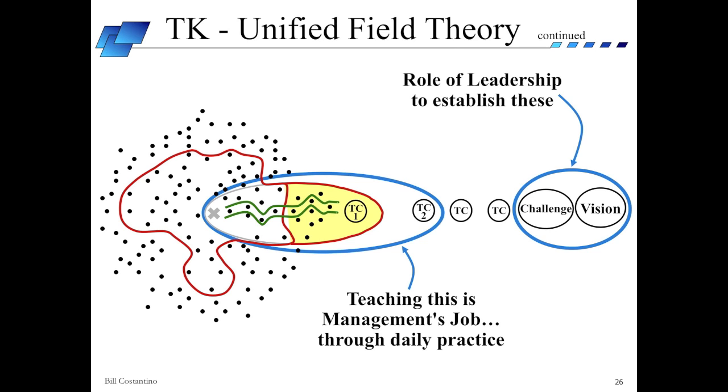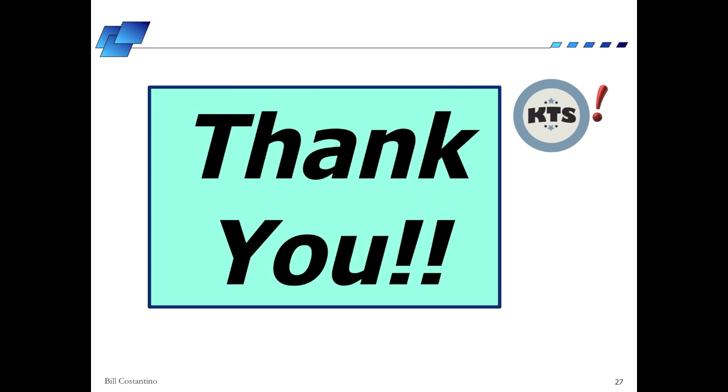Consistent application of the Toyota Kata approach results in two powerful benefits. It allows us to achieve challenging target conditions that are critical to our long-term success to achieve new and higher levels of performance. It also develops the skill and capabilities of the people in our organization to face more of these challenges in the future and to do so with increasing confidence. So there you have it, the unified Toyota Kata field theory version 1.0.